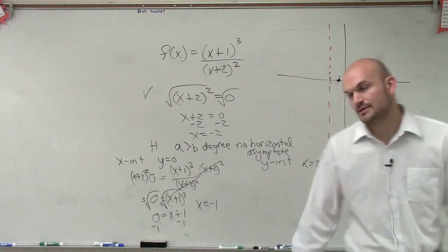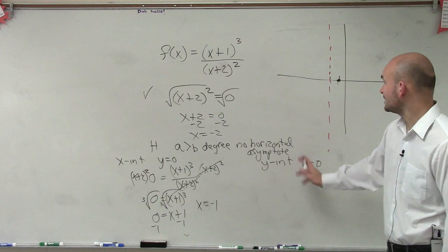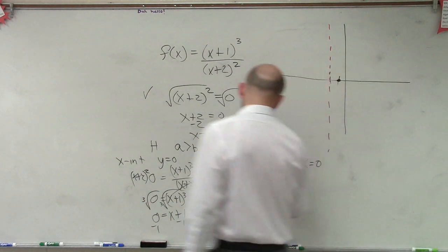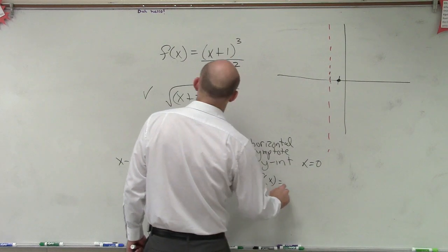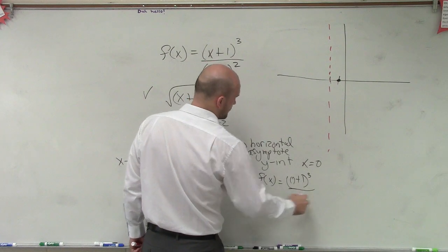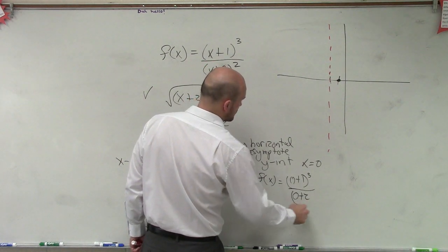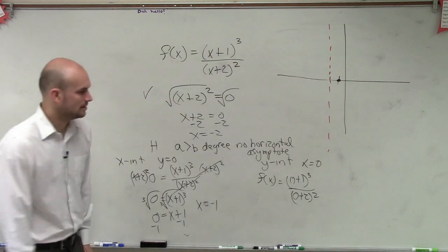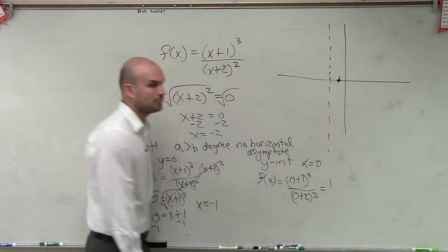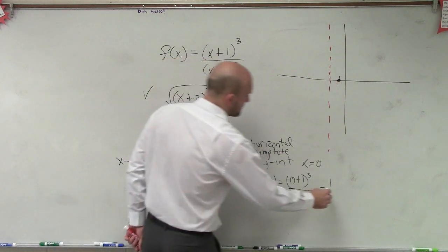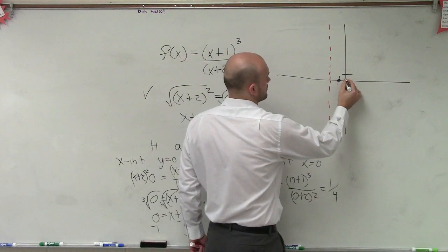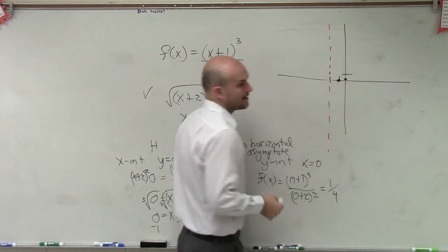Now to find the y-intercept, I simply plug 0 in for x. So f of x equals 0 plus 1 cubed over 0 plus 2 squared. Well, 0 plus 1 is 1, and 1 cubed is 1. 0 plus 2 is 2, and 2 squared is 4. So therefore my y-intercept is at 1 fourth.